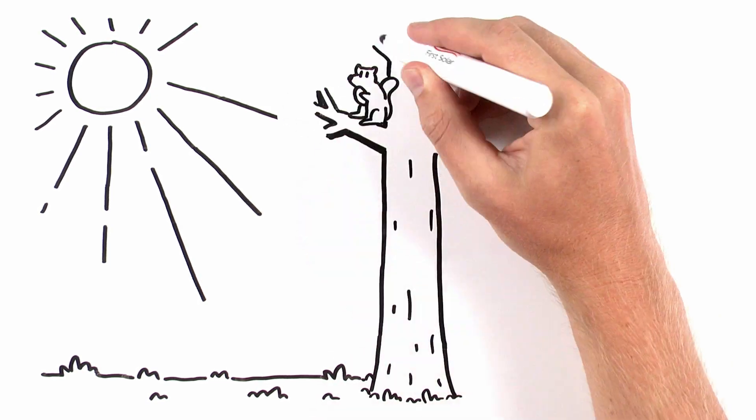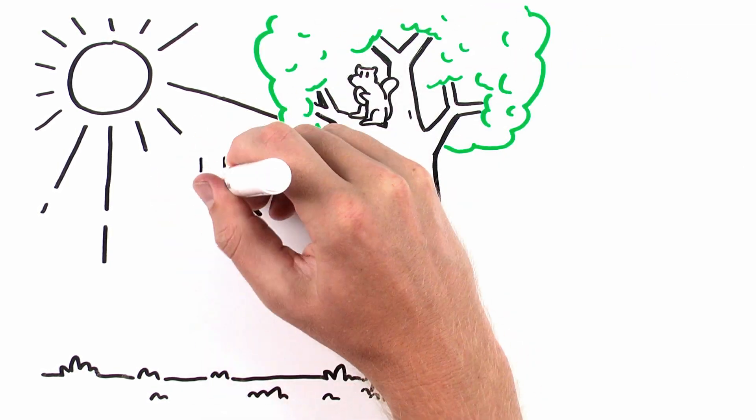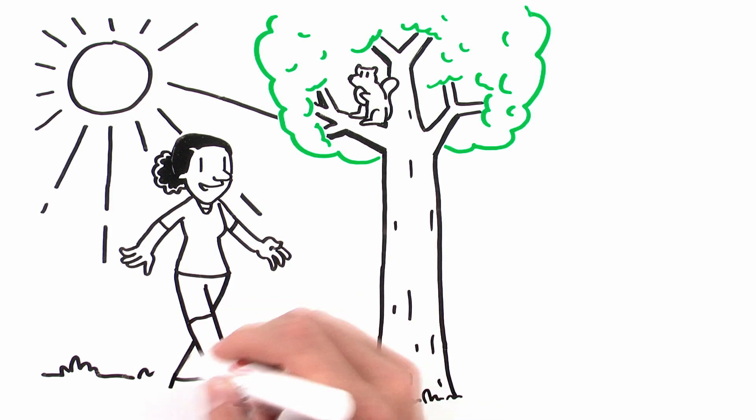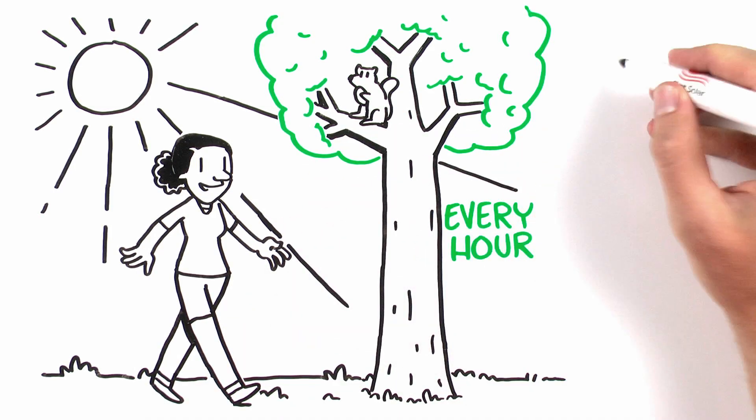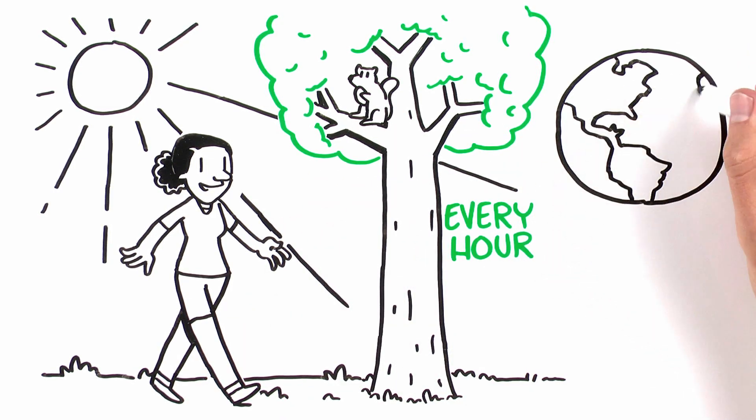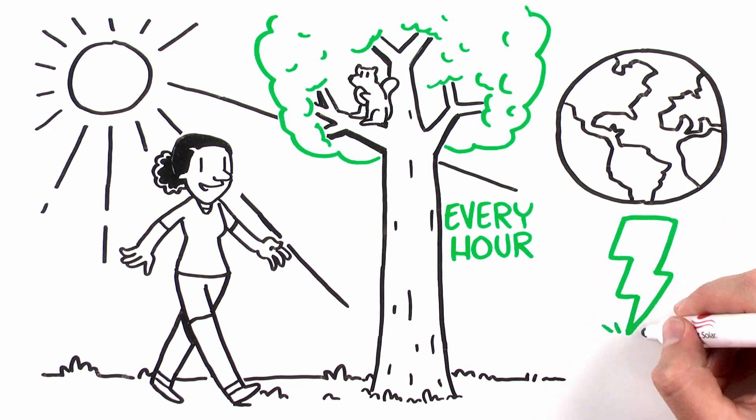Essential to the life cycle of plants and animals alike, it warms us and illuminates our days. And every hour, enough sunlight hits the earth to meet the world's energy needs for an entire year.